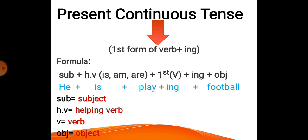And the first form of verb that I have selected is play, by applying ing, and the object that I have chosen is football. So the sentence becomes: he is playing football.